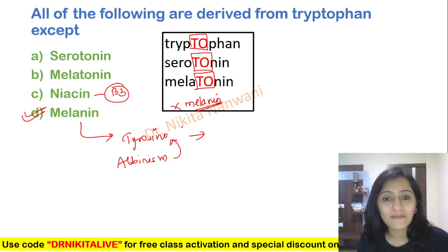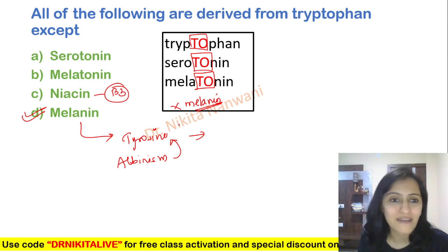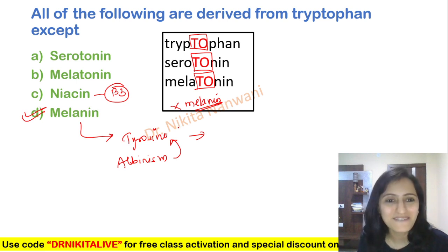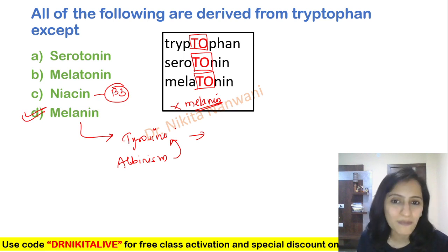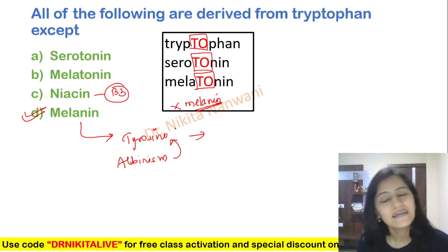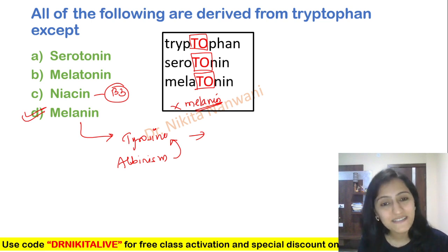Can you tell me in the comments which enzyme is deficient in albinism, what is the inheritance pattern of albinism, and what is the chromosome number for albinism? I am waiting for your comments. Do let me know how you are finding these mnemonic videos and if you have any topic suggestions for mnemonics. I will definitely try my best to work on the same. Thank you so much. Goodbye — take care and keep studying, keep revising, and keep winning.